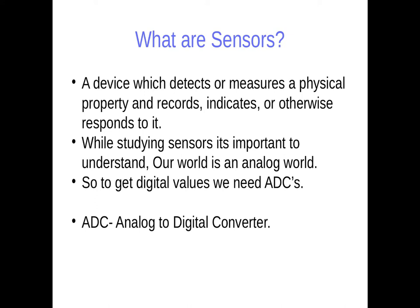While studying sensors, it is important to understand that our world is an analog world. This voice that I am talking with is an analog voice — it has different frequencies, different pitch, and every moment it is changing. It is a continuous curve. Sensors in electronics also give you analog inputs. When you use sensors in electronics, you get values ranging from a lower to a higher value — maybe from 0 volts to 5 volts — and they may have any value: 1.1, 1.2, 1.3, 2.2, 2.4, any value.